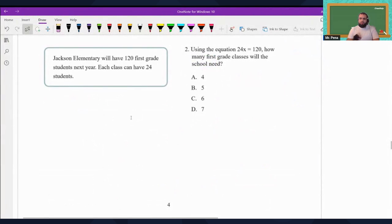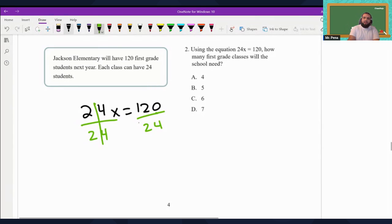Now we're moving on to number two. Jackson Elementary will have 120 first grade students next year. Each class can have 24 students. Using the equation 24x equals 120, how many first grade classes will the school need? So that's 24x equals 120. We're going to divide both sides by 24. So if you take 120 students and divide them into groups of 24, how many groups will you have? How many classes? That's going to be x equals 120 divided by 24, which is 5. You will have 5 first grade classes.